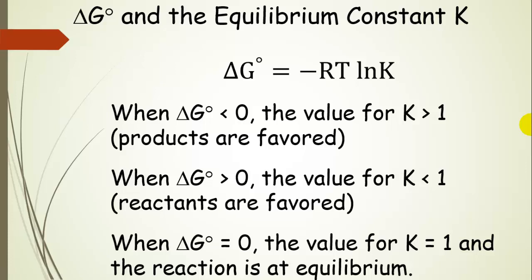When delta G is positive, the value for the equilibrium constant is going to be less than one, so reactants are favored. The equilibrium constant is products over reactants — if products is smaller than reactants, you get a number less than one, meaning reactants are favored. When delta G equals zero, the equilibrium constant is one and the reaction is at equilibrium.